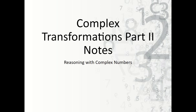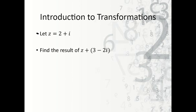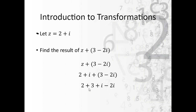Let's take a look now at the Complex Transformations Part 2 notes. The notes begin with the Learning Goals and Success Criteria. Introduction to Transformations: we're going to look at z being some point on the Cartesian plane as 2 plus i. Find the result of z plus 3 minus 2i. So I'm going to take 2 plus i and add it to 3 minus 2i, combining like terms: 2 plus 3 and i minus 2i. So 2 plus 3 is 5 and i minus 2i is negative i, giving us 5 minus i. We should notice this is a transformation of the original.